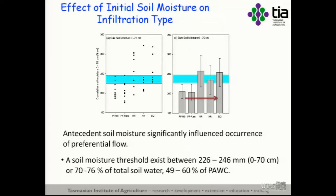What we did find — not surprisingly — is a significant relationship between soil moisture and the occurrence of preferential flow: around 226 to 250 millimetres, or about 70% of total soil water. Below that threshold you had infiltration by preferential processes; above that antecedent moisture content, when the profile was already 70% moist, you had uniform flow processes. These soils switch how they behave according to moisture content.